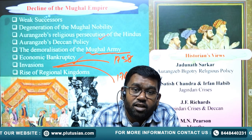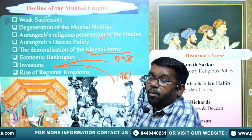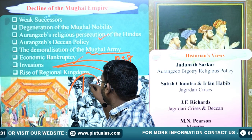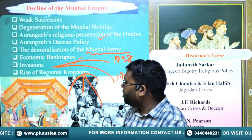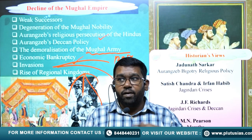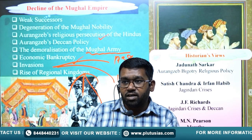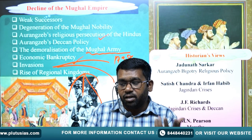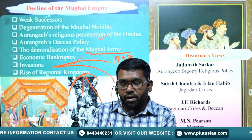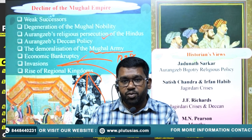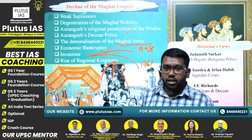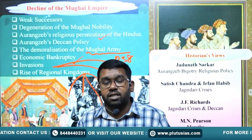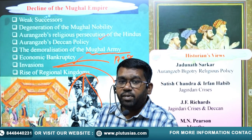Additionally, the Marathas used to collect tribute from the Mughals, making the Mughals like puppets of the Maratha power in the latter period. Finally, the rise of regional kingdoms — rebellious states like the Marathas, Sikhs, and Jats; successor states like Hyderabad, Bengal, and Awadh; and independent states like Mysore and Travancore — all became independent, especially in the 18th century, which is another important reason behind the decline of the Mughal Empire.